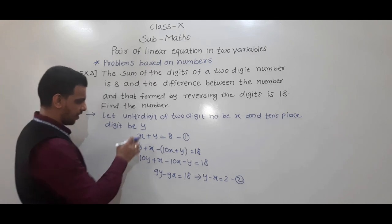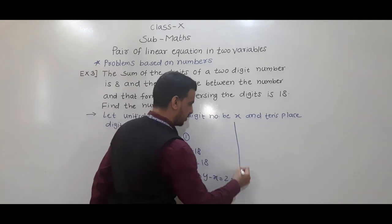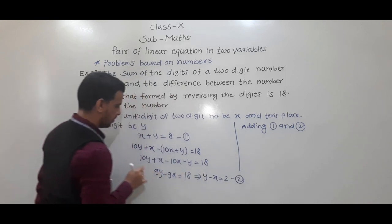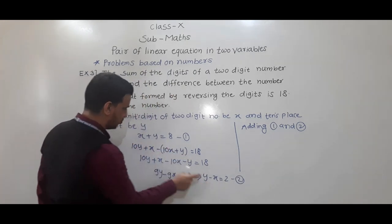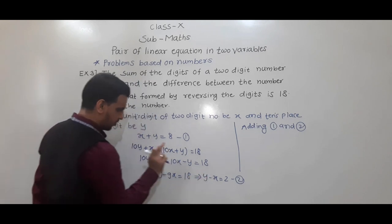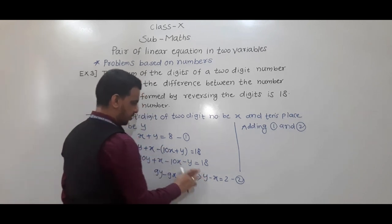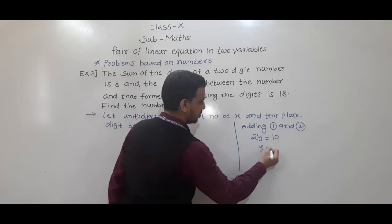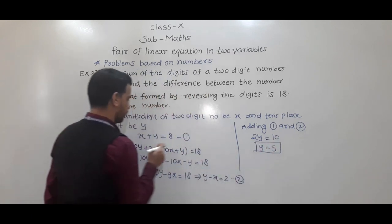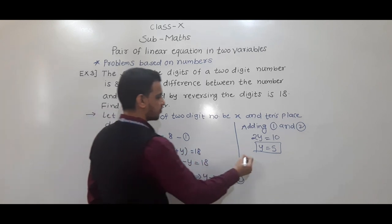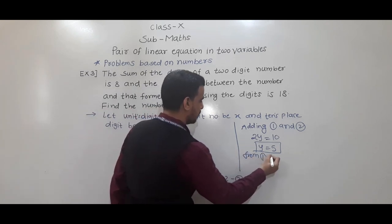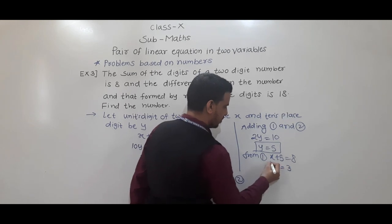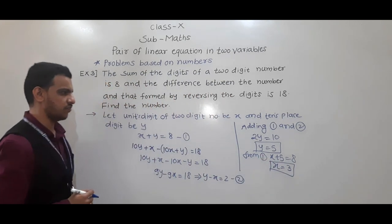Now we have to solve equations 1 and 2. Adding them: x and negative x cancel, y plus y gives 2y. So 2y equals 8 plus 2, that is 10. So y equals 5. Substituting y equals 5 in equation 1: x plus 5 equals 8, so x equals 3. Therefore x equals 3 and y equals 5.